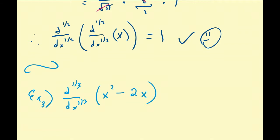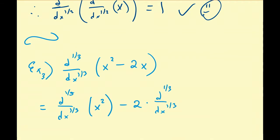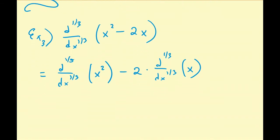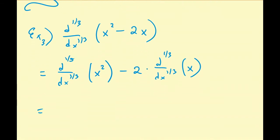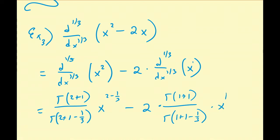Since derivatives are linear operators, we can distribute over the subtraction sign. This gives us the one-third derivative of x squared minus 2 times the one-third derivative of x. We apply the fractional order power rule to each: this is gamma of 2 plus 1 over gamma of 2 plus 1 minus the order, times x to the 2 minus the order, minus 2 times gamma of 1 plus 1 over gamma of 1 plus 1 minus the order, times x to the 1 minus one-third.